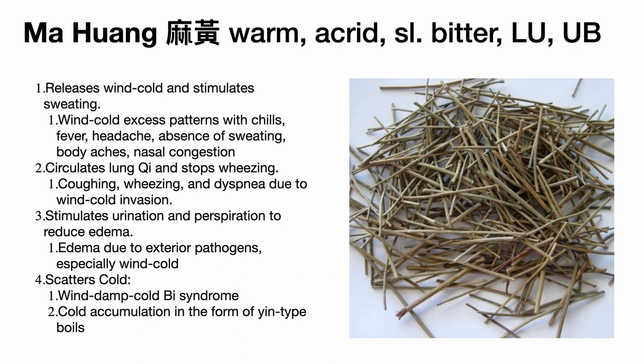Let us analyze the individual herbs and their purpose in this formula. Ma Huang — ephedra herb — is warm, acrid, and slightly bitter. It enters the lung and urinary bladder channels. Its primary function is to release wind-cold and stimulate sweating. We only prescribe it in cases of wind-cold excess patterns where chills, fever, and headache are present in the absence of sweating. The patient may also have body aches and nasal congestion.